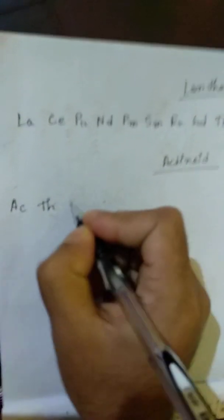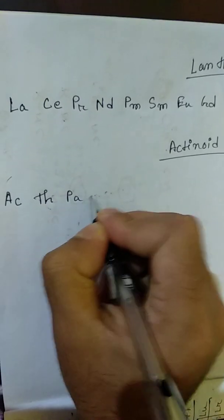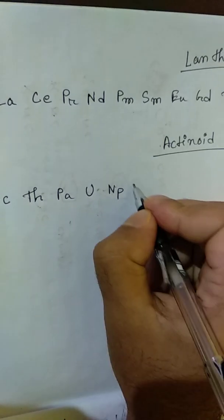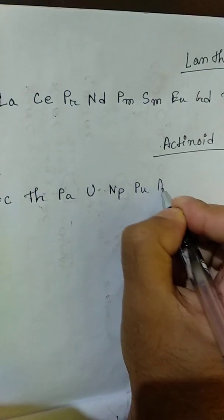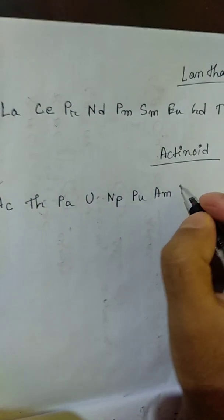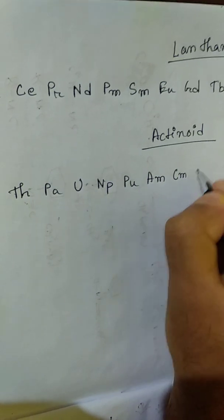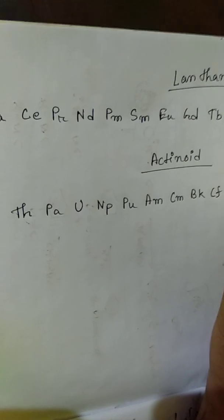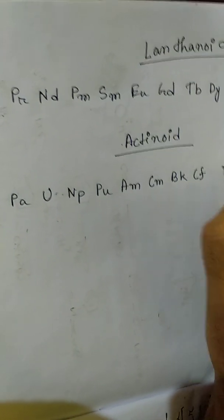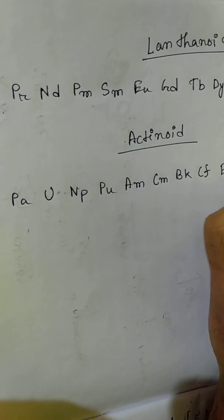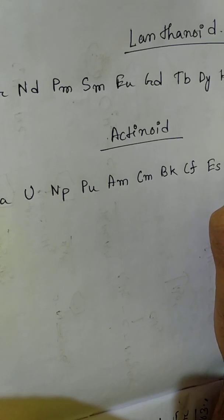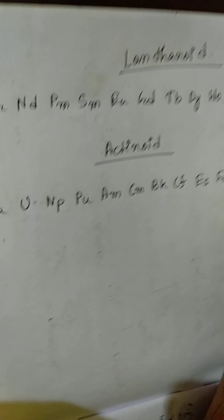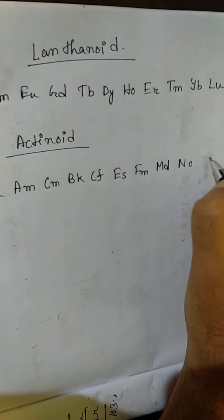Actinoid elements: Thorium (Th), Protactinium (Pa), Uranium (U), Neptunium (Np), Plutonium (Pu), Americium (Am), Curium (Cm), Berkelium (Bk), Californium (Cf), Einsteinium (Es), Fermium (Fm), Mendelevium (Md), Nobelium (No), Lawrencium (Lr).